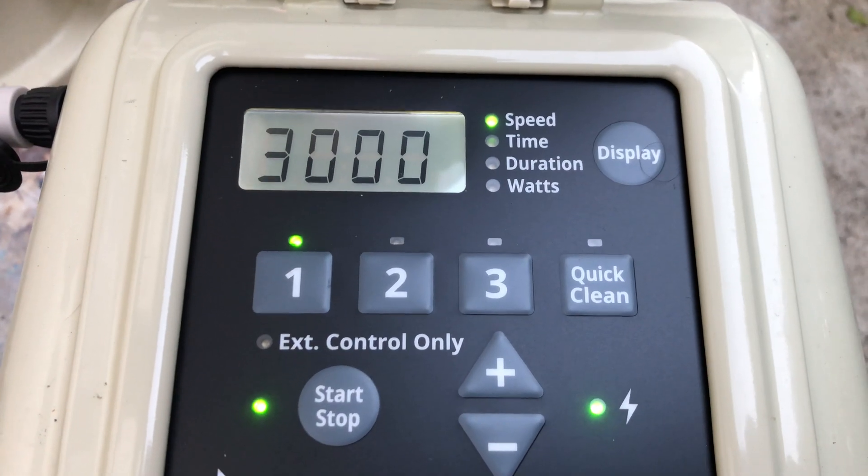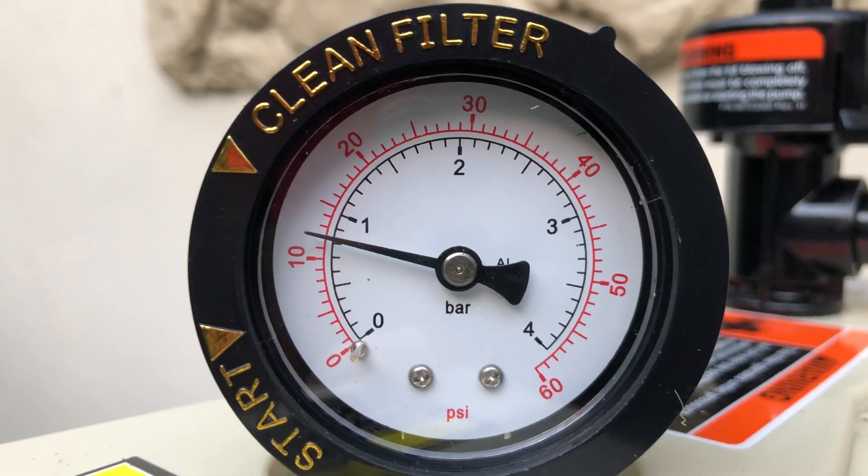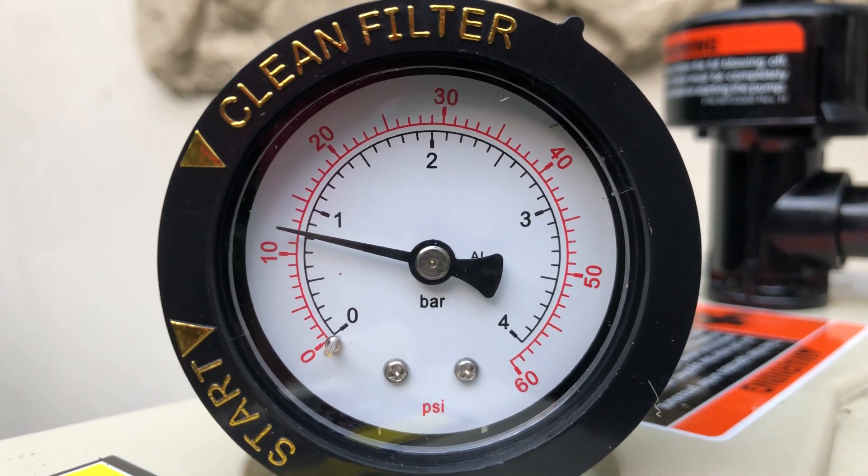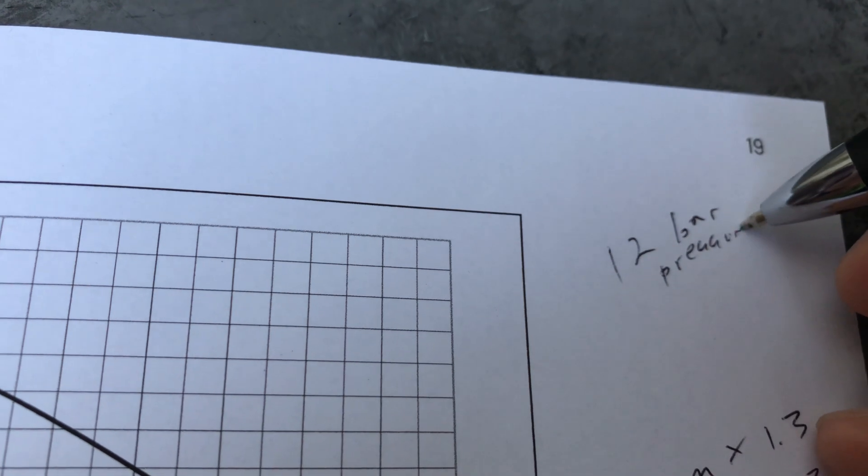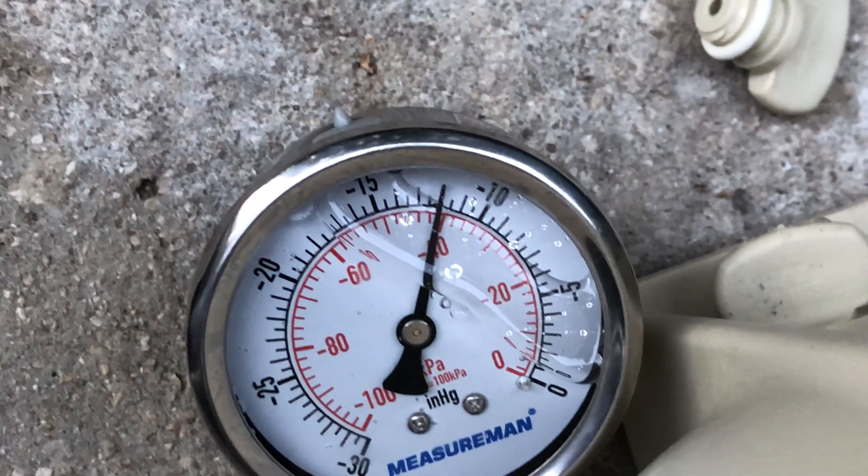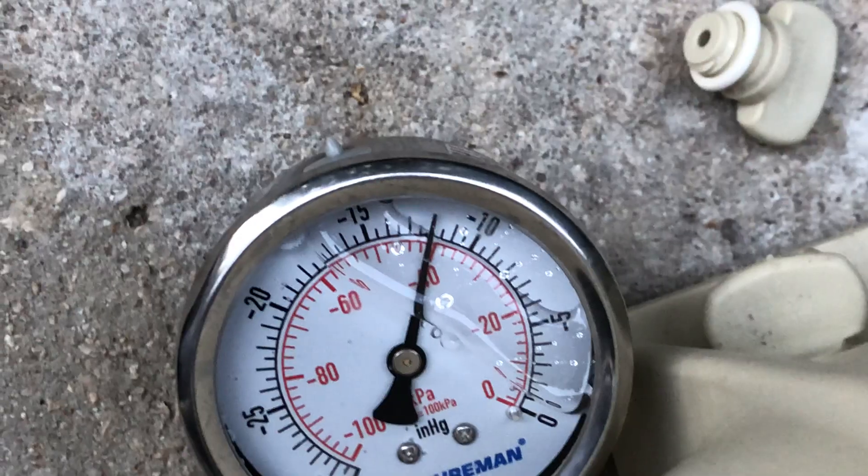Alright, so now we're at 3,000 RPM, so let's check our gauges. So on the top of the filter we have the pressure gauge, and that's reading at about 12 bar right now. And it looks like our vacuum reading is at right about 12, so now let's record that.